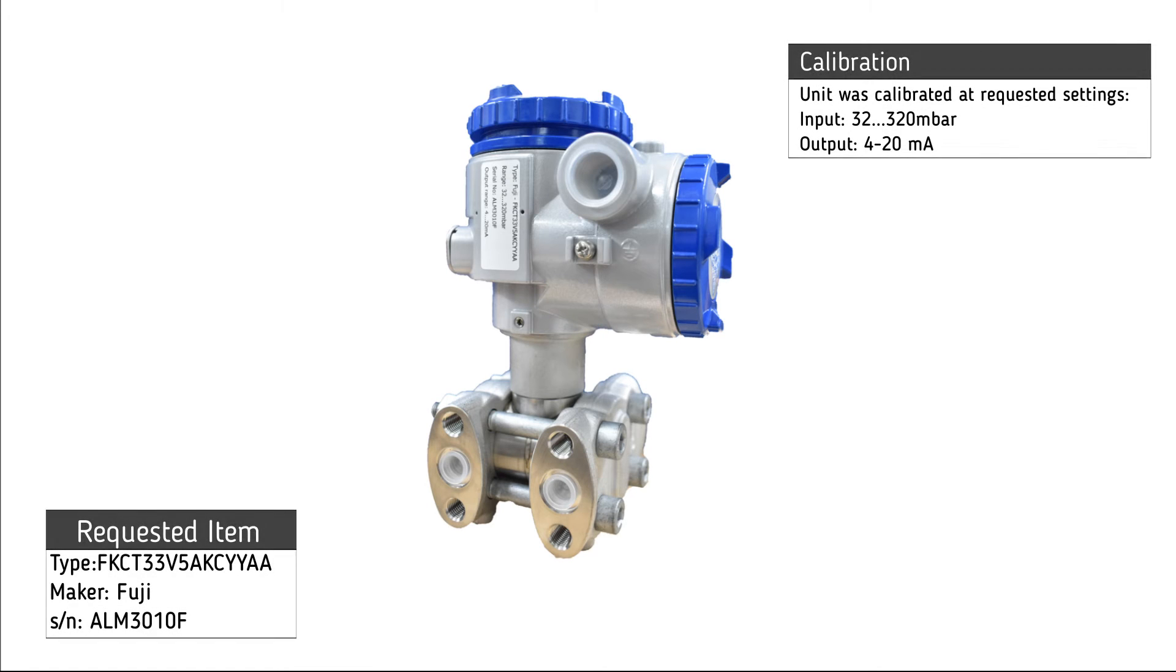Testing of Fuji differential pressure transmitter. The transmitter has been set to a calibration range of input signal from 32 to 320 millibar.